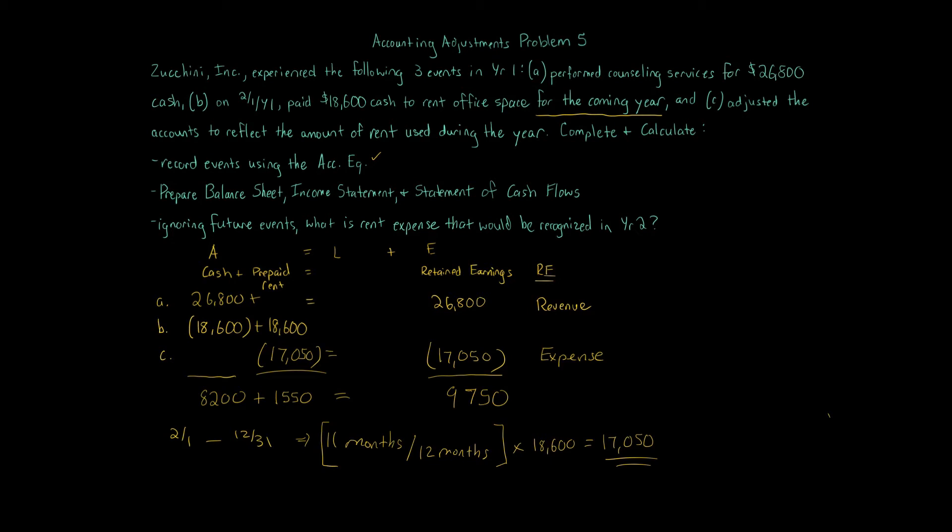Now what we can do is go through and do the income statement, balance sheet, statement of cash flows, and we can also answer the last question. So let's start first with our income statement. Income statement is very easy. We're just taking revenue minus expenses based on these problems. So income statement, revenue minus expenses. We have revenue here, expenses. So revenue is $26,800. Expenses, $17,050. We have $9,750. That is our net income for these transactions.